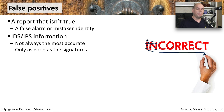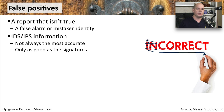If you're getting a message from an intrusion detection system or an intrusion prevention system, these alerts are usually based on signatures. A piece of information has gone through the IPS that matches a signature, and it's informing you that there was a match. Generally, we have to rely on these signatures, so you always want to be sure that you're updating to the latest signatures so that a lot of these false positives might not occur.